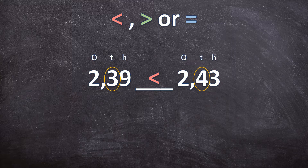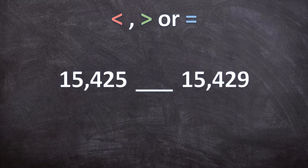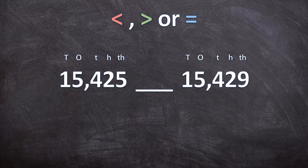Now let's look at another example. Here we have 15,425 and 15,429. Let's look at our place values again, starting at the largest and moving to the smallest.